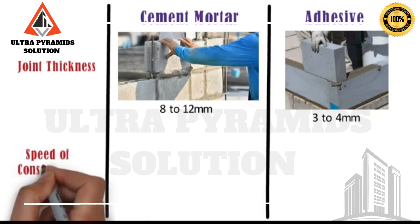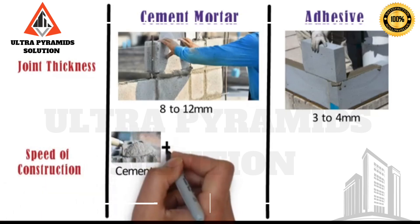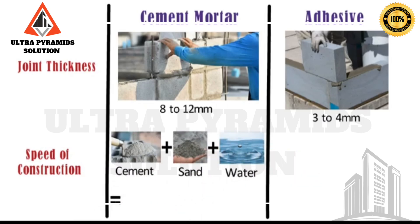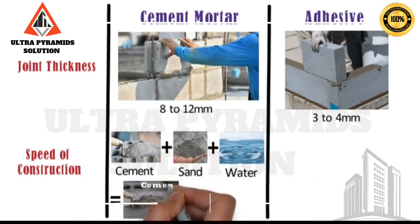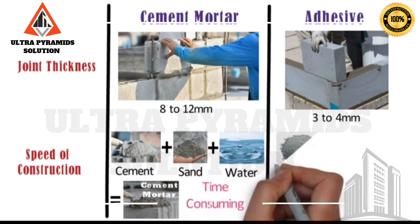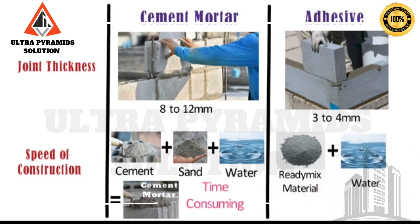Speed of construction: In case of cement sand mortar, the raw materials such as cement, sand, and water are to be correctly proportioned and then mixed carefully to obtain the paste, which is a time-consuming process. Whereas, AAC block adhesive is a ready-mix material and only water needs to be added, so the speed of construction is more.